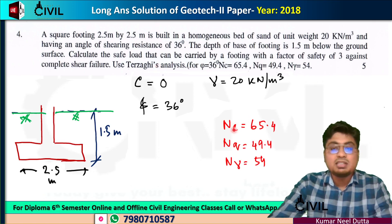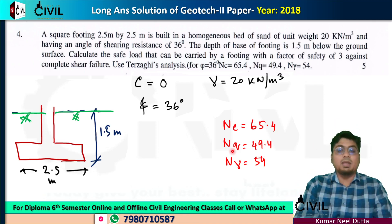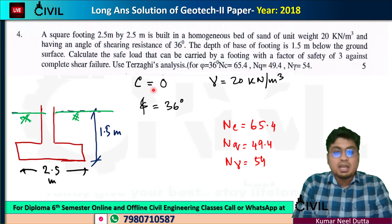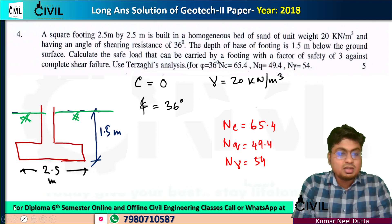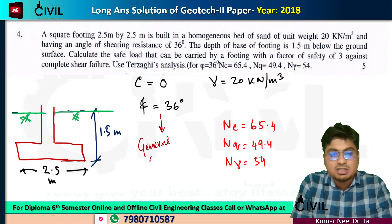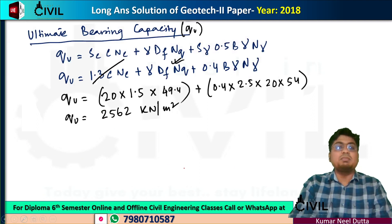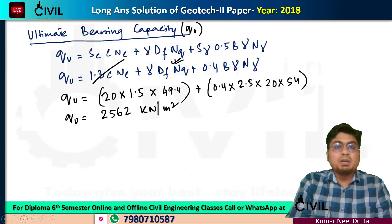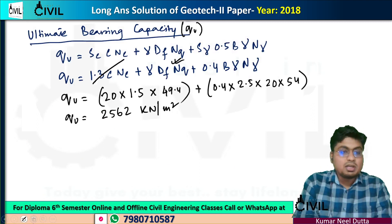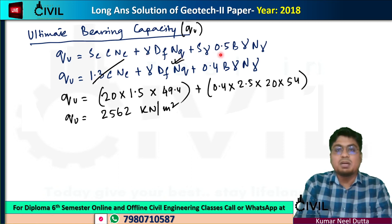The data given includes Nc, Nq, and N-gamma bearing capacity factors. The question specifies phi equals 36 degrees — this is given data. For the ultimate bearing capacity, the main formula is: qu = sc·c·Nc + gamma·Df·Nq + s-gamma·0.5·B·gamma·N-gamma.